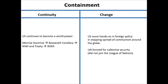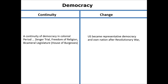Containment: a continuity — the Monroe Doctrine, the Roosevelt Corollary, World War I and the Treaty of Versailles — the U.S. getting involved in world policy. The change is communism: after World War II, the U.S. becomes the leader of containment. The UN is also formed after World War II — a big change, since the U.S. didn't join the League of Nations. Now the U.S. is one of the five permanent powers of the UN. In terms of democracy, there's continuity from the colonial period: Zenger trials, freedom of religion, bicameral legislature, House of Burgesses. The change is the U.S. becoming a representative democracy after the Revolutionary War.